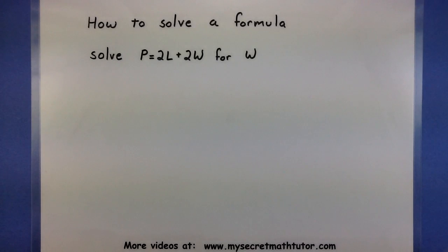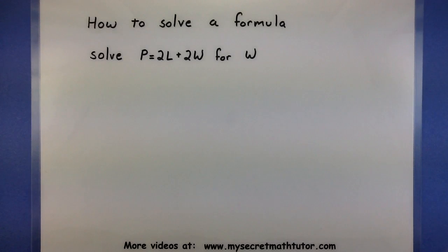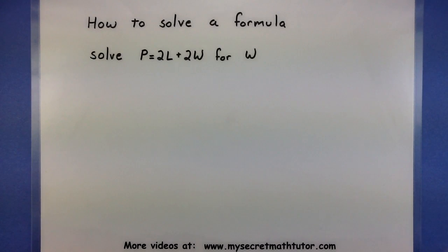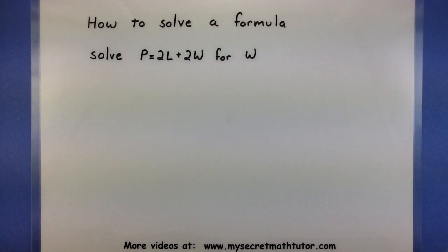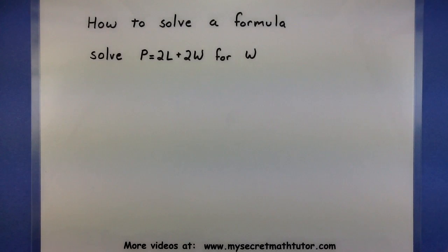Let's take a look at solving formulas. When you want to solve a formula for a specific variable, you basically go through the same process as solving an equation. This usually involves shifting things around, say adding or subtracting things from both sides. The key to keep in mind is what variable you're looking for and how to isolate it as much as possible.